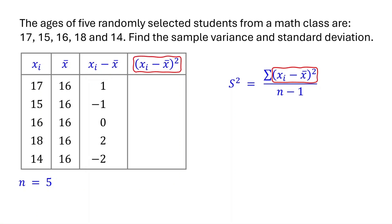Next, square each of the differences you obtained. 1 squared is 1. Negative 1 squared is also 1. 0 squared is 0. 2 squared is 4. Negative 2 squared is also 4.